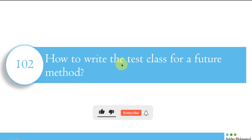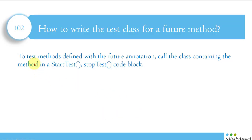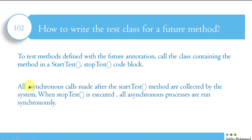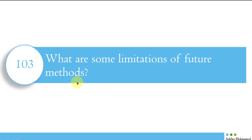The next question is: how do we write a test class for a future method? To test methods defined with the @future annotation, call the class containing the method inside a Test.startTest() and Test.stopTest() block. All asynchronous calls made after startTest() are collected by the system, and when stopTest() is executed, all asynchronous processes are run synchronously. This is how you write the test class for future methods.